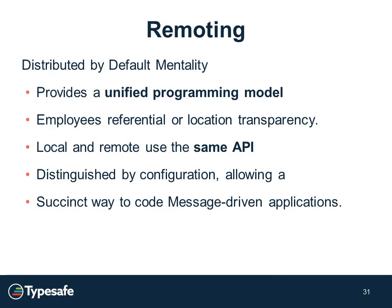When we come to the idea of remoting, the philosophy that ACCA presents is distributed by default. It provides this unifying programming model employing the notion of referential or location transparency. When you have two actors and one is on the same machine and one is on another machine, the way they know about each other is through configuration. If you look at the code, it's exactly the same — it's just one is on one physical machine and another is on a different one. That API is the same whether you're talking locally or remote.